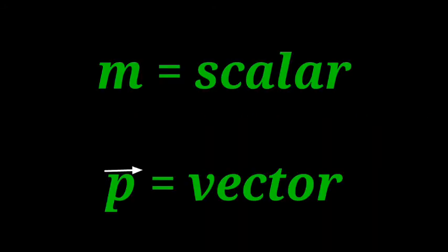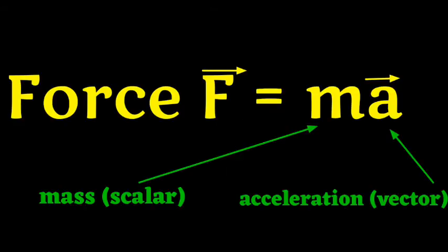Multiplication of a vector by a scalar: let m be any scalar and P be any vector. Their product is m × P. For example, force F is the product of the scalar m (mass) and the vector a (acceleration).